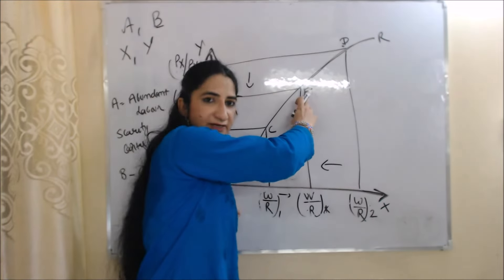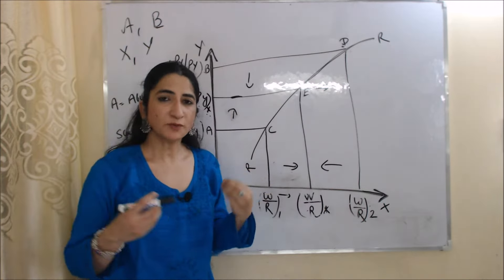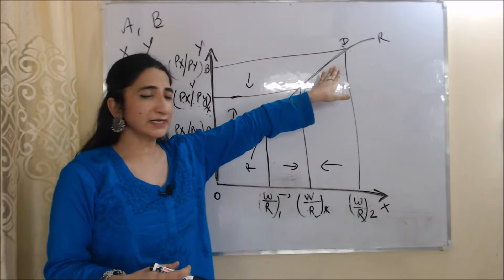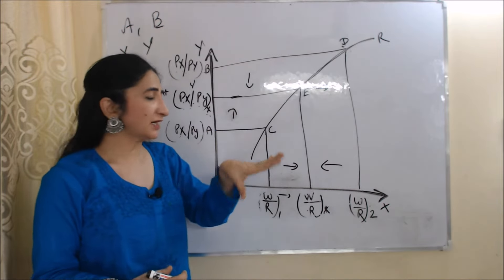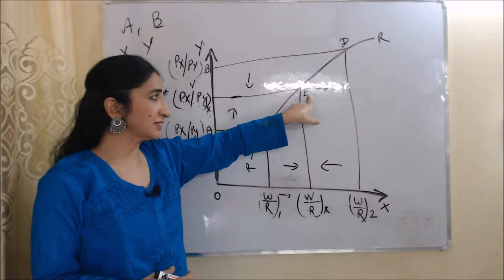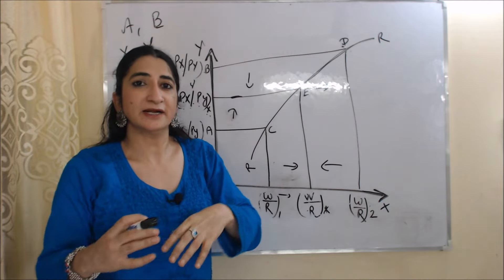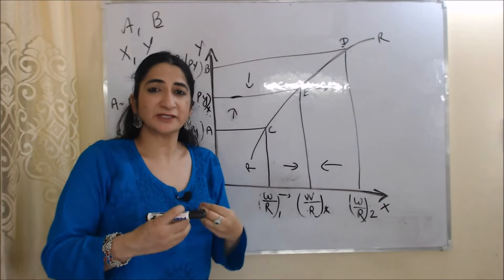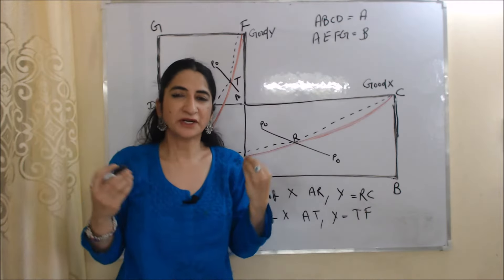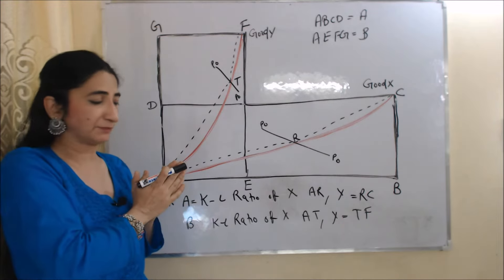After trade, both countries A and B reach equilibrium point E. At this equilibrium point, wage rates are equal in both countries. So before trade, wage rate was low in country A but high in country B, but after trade wage rate increased in country A but fell in country B. As a result, at point E, wage rate becomes equal in both countries. We can say that according to this theorem, free trade makes factor prices equal in those countries which are doing trade with each other.